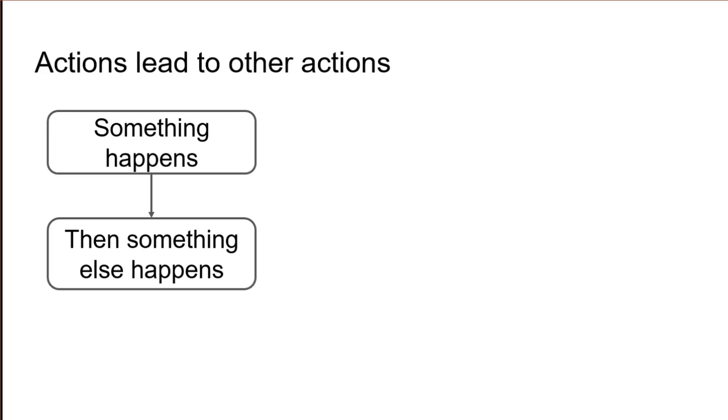Actions often lead to one another. There must be an arrow from one action to the next, and the order they happen in is always the same — the process cannot go against the arrow. Usually you would draw from top to bottom or left to right, but there are no fixed rules for reading direction, so remember the arrowheads.